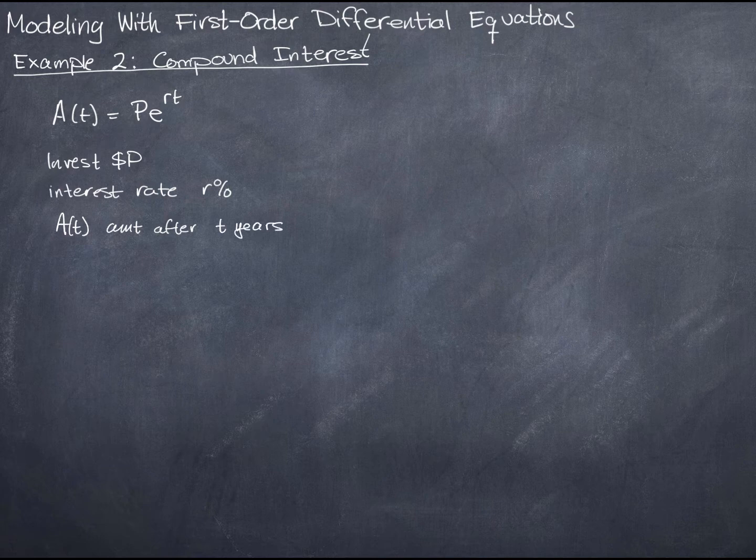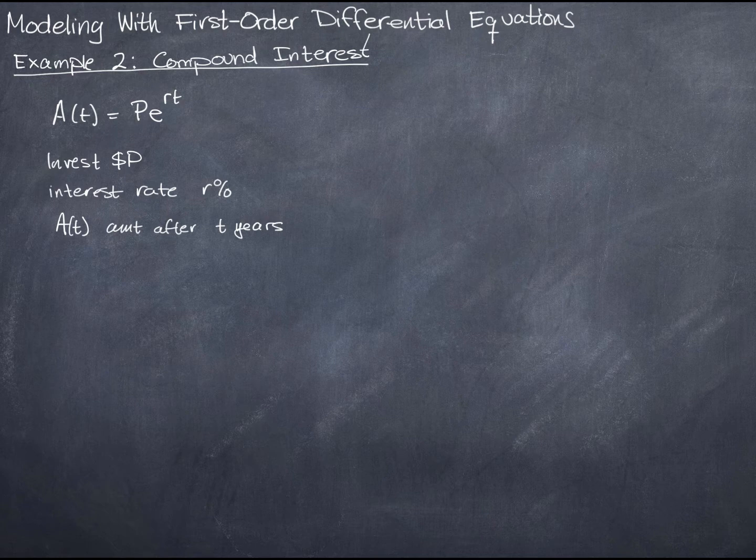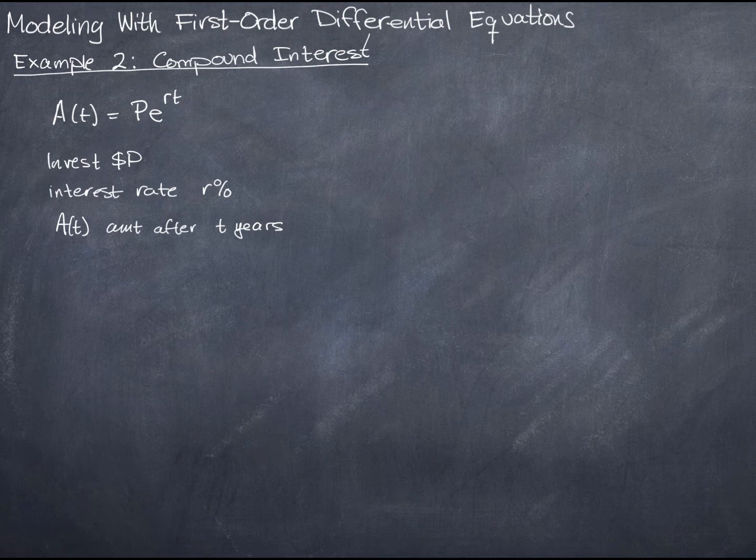A of t is the amount in the account after t years. Now, t is always measured in years. That's traditional. It's conventional. If we just state at the outset that it will be measured in years, then everybody agrees to that. Then we don't have to define it every single time.